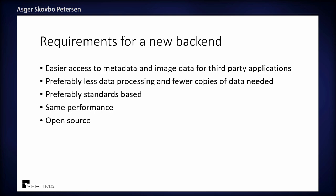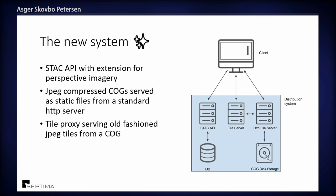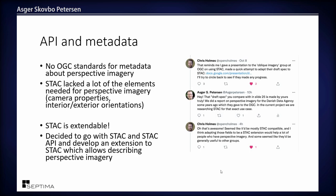For the new system, they wanted easy access to metadata and image data for third-party applications — mainly developers. They wanted less data processing, fewer copies of data, preferably standards-based access, the same performance, and they wanted it to be open source. The new system we proposed is based on STAC and the STAC API, JPEG-compressed COGs served from a standard HTTP server, and a tile proxy for old-fashioned JPEG tiles to make access even easier for third parties.